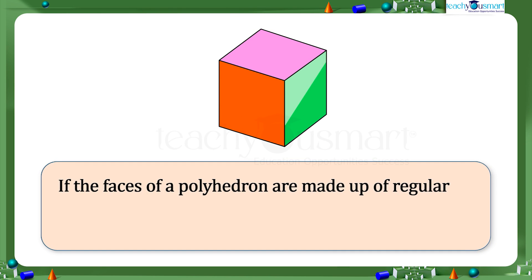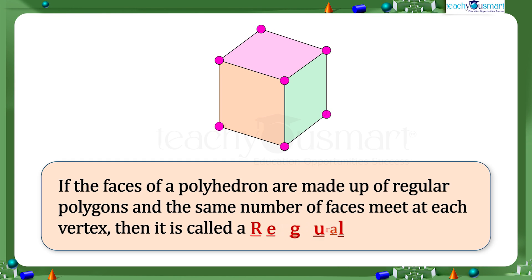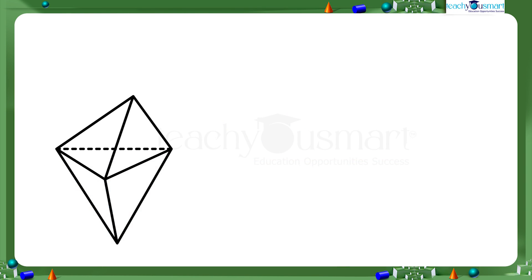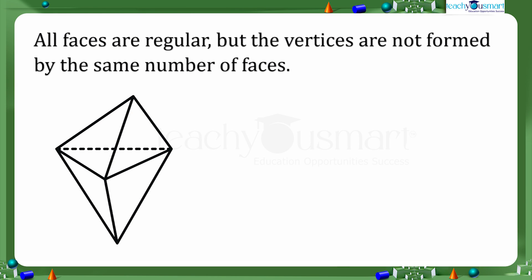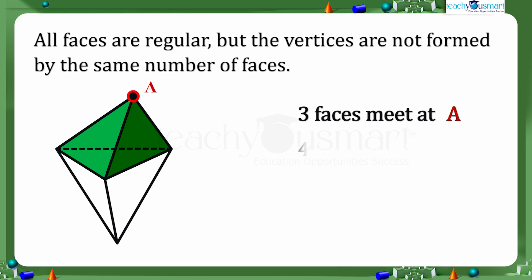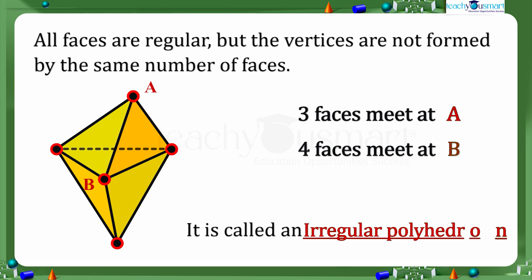If the faces of a polyhedron are made up of regular polygons and the same number of faces meet at each vertex, then it is called a regular polyhedron. But if all faces are regular yet the vertices are not formed by the same number of faces — for example, three faces meet at point A but four faces meet at point B — then it is not a regular polyhedron; we call it an irregular polyhedron.